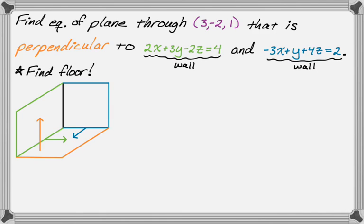So once you've worked that out, it becomes much more manipulating symbols and numbers. My first normal vector is 2, 3, negative 2. My second normal vector is negative 3, 1, 4.